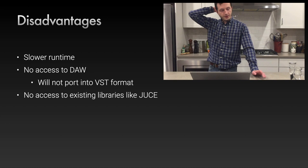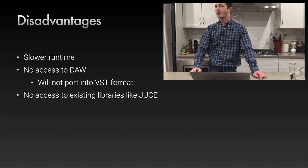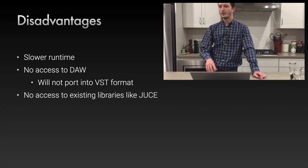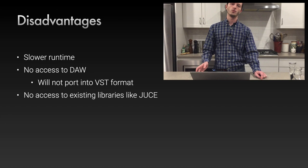The disadvantages of Python: first, slower runtime — Python gets a bad rap for being slow, and while we'll talk about tools that make it faster, it's still slower than C++. You don't get access to the DAW, so you can't port Python code into a VST. If you design something cool, you'll want to bounce it to samples or rewrite it in C++. You also don't get access to existing libraries like JUCE.